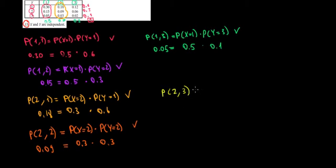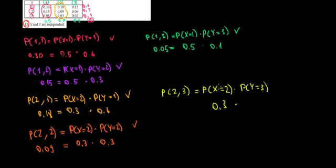Now we do the same when checking the probability of x equals 2 and y equals 3. That should equal the probability of x equals 2 times the probability of y equals 3. The probability of x equals 2 is 0.3, and the probability of y equals 3 is 0.1. Multiplying them gives 0.03, and the cell also shows 0.03. So one more relationship in check.